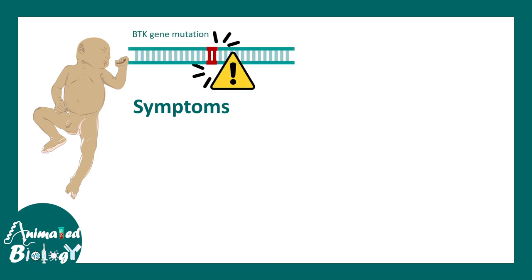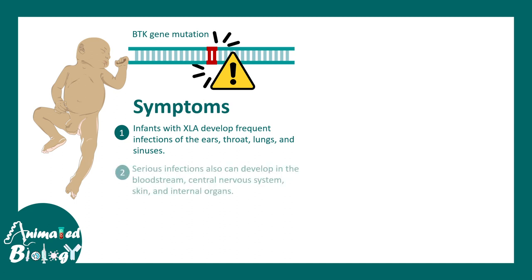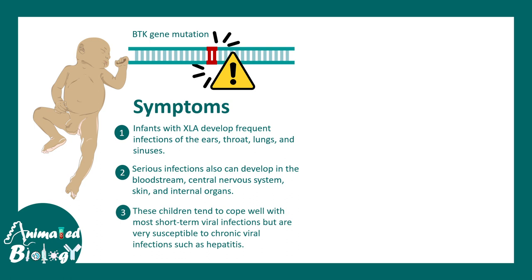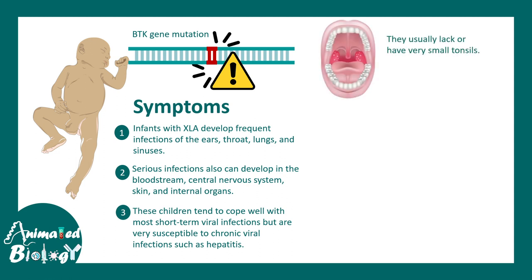If B cells are absent and development doesn't happen, there are no antibodies. Infants with XLA have several throat, ear, and lung infections. Sometimes the infection is very serious and goes to the central nervous system or damages internal organs. These children tend to cope well with short viral infections, but they are susceptible to chronic viral infections such as hepatitis. They also have a smaller size of tonsils.